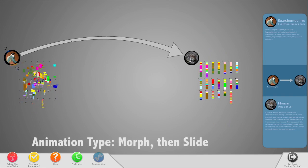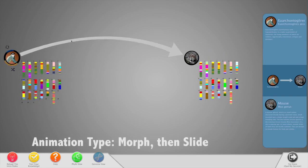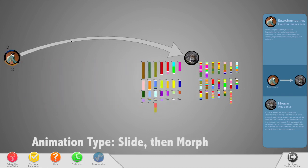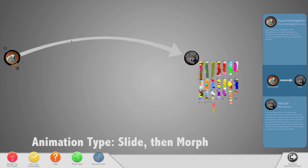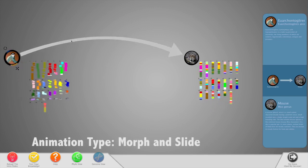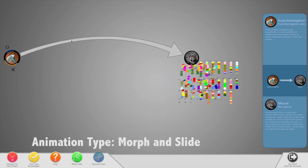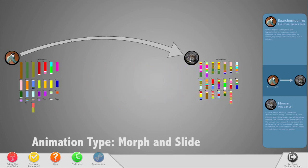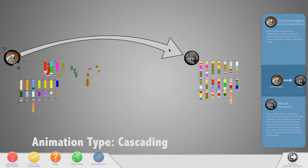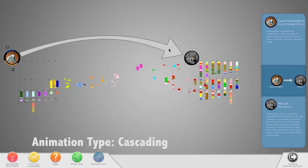The first was morphing then sliding the chromosomes to their destination. The second was sliding then rearrangement. The third was sliding and morphing simultaneously. Finally, we implemented a cascading or staggered animation technique.